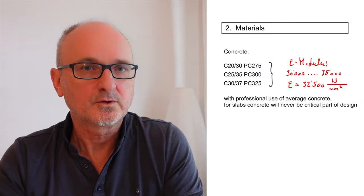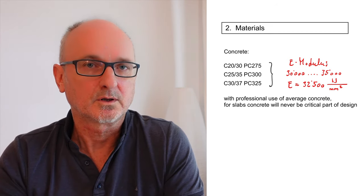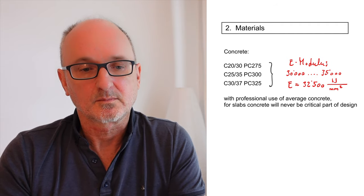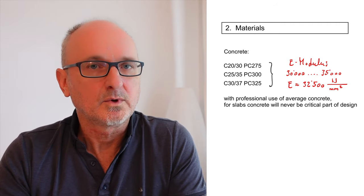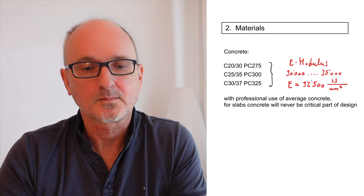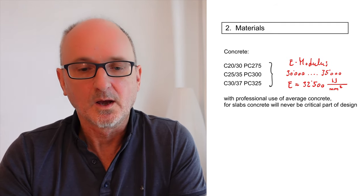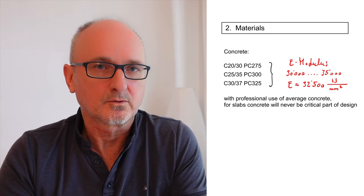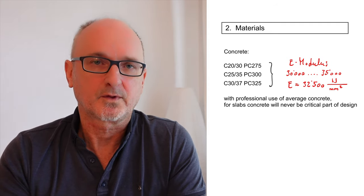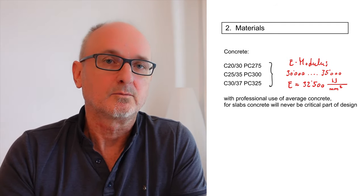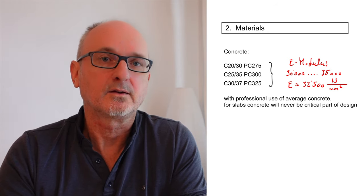Check your local concrete quality. For slabs, the bearing capacity of concrete is usually never a problem — it's always the reinforcement that is crucial. Nevertheless, we have to check the concrete because we need the E-modulus for the calculation of deformations. For regular concrete, E-modulus is between 30,000 and 35,000 N/mm². For this example we calculate with 32,500 N/mm² as an average value.